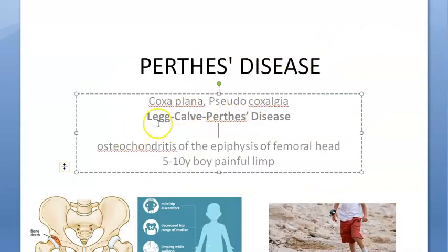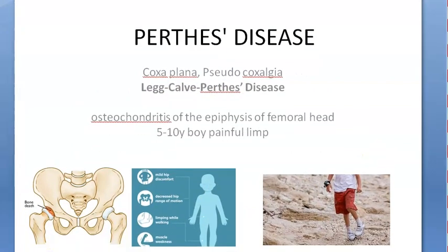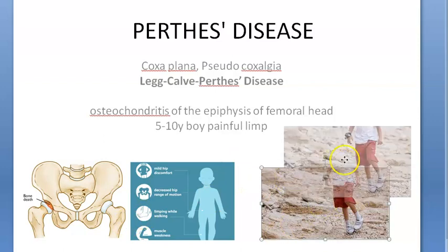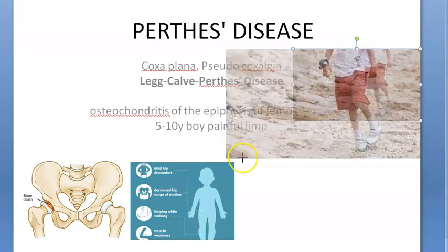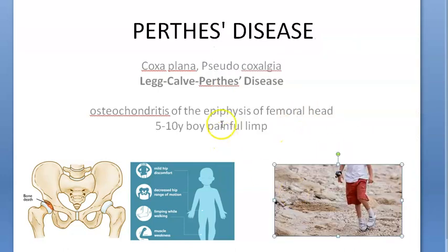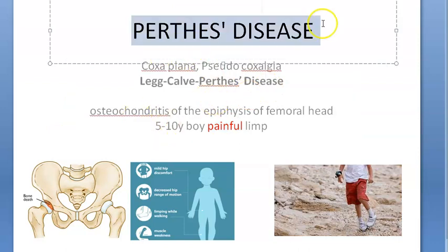This was named after the scientist Legg, which is why it is called Legg-Calvé-Perthes disease. Interestingly it is affecting the leg. This disease affects 5 to 15 year old boys, who will present with a painful limp.